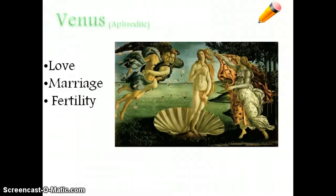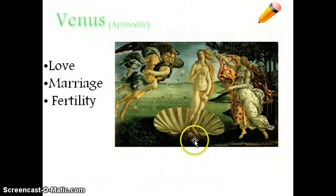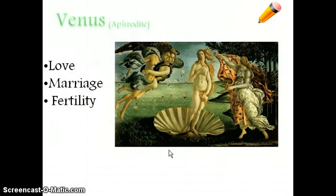And lastly, we have Venus, or Aphrodite. Venus is the goddess of love, marriage, and fertility, and she is born of the sea. This is a very famous painting from later in history that shows Venus arising on a clamshell from the sea. She's almost always shown unclothed because she is the goddess of love, fertility, and marriage.